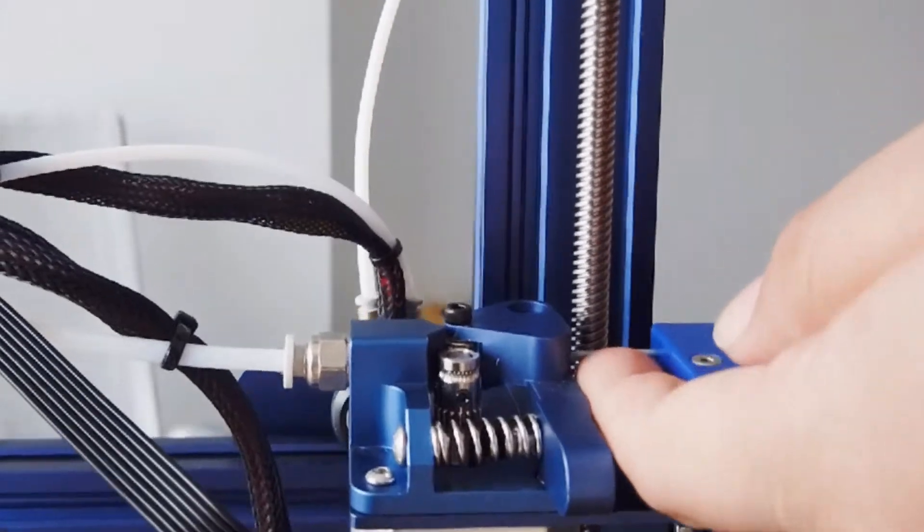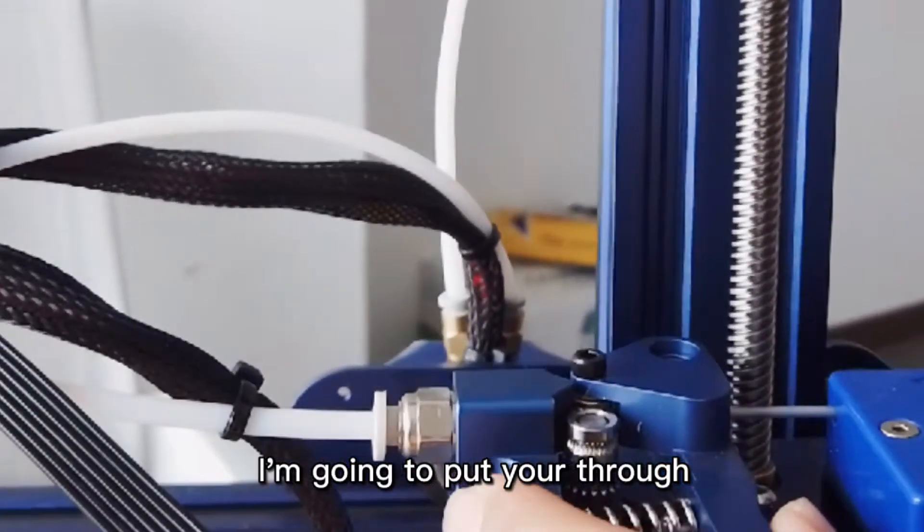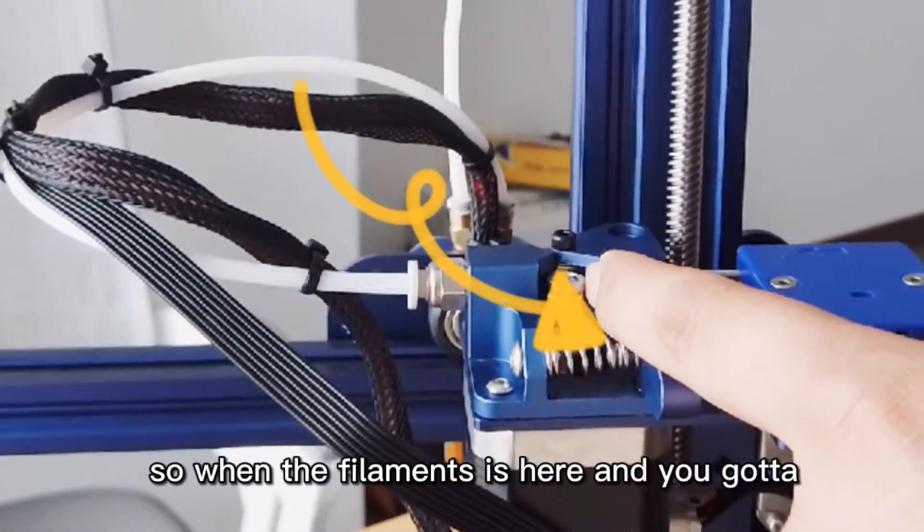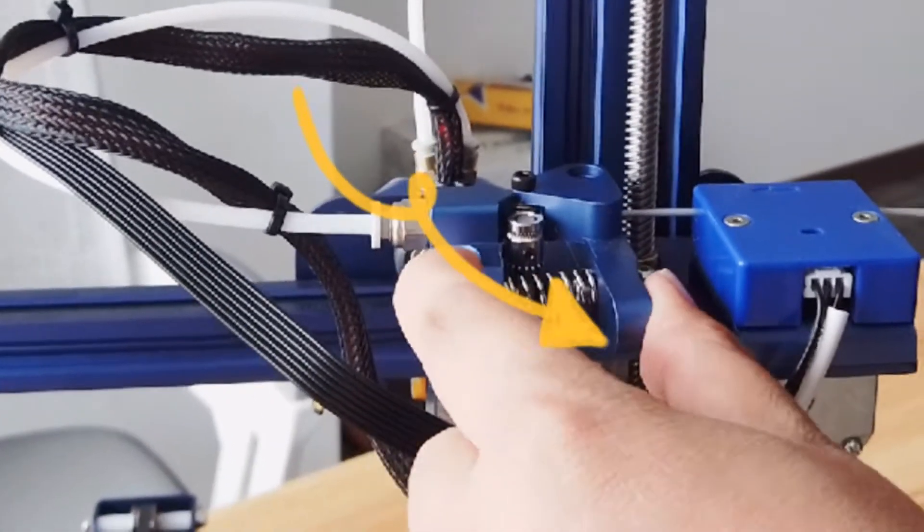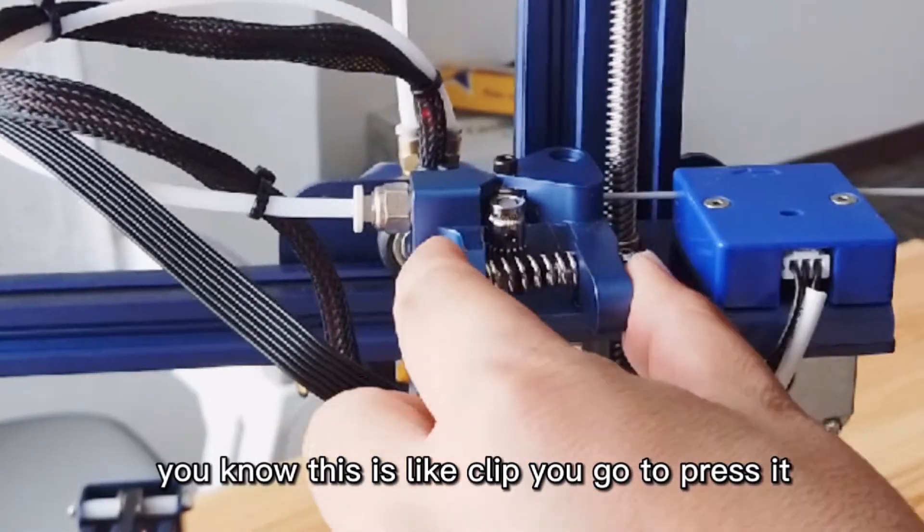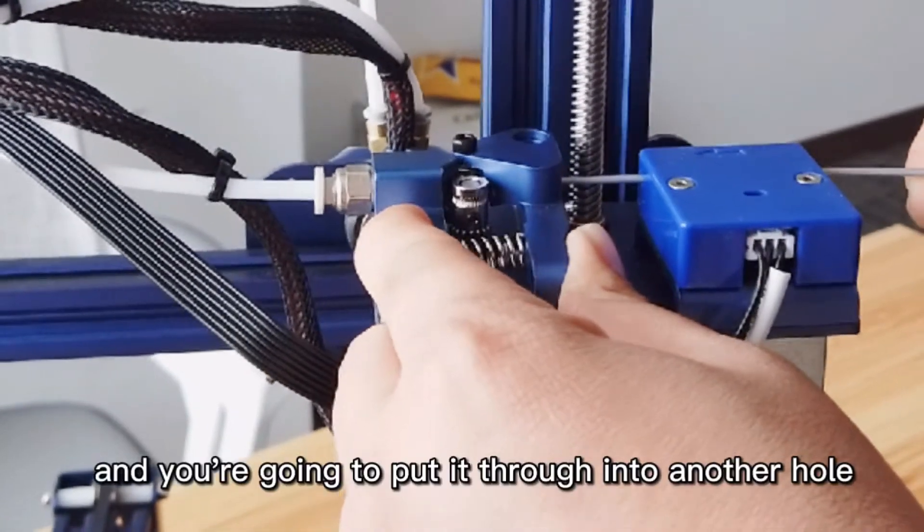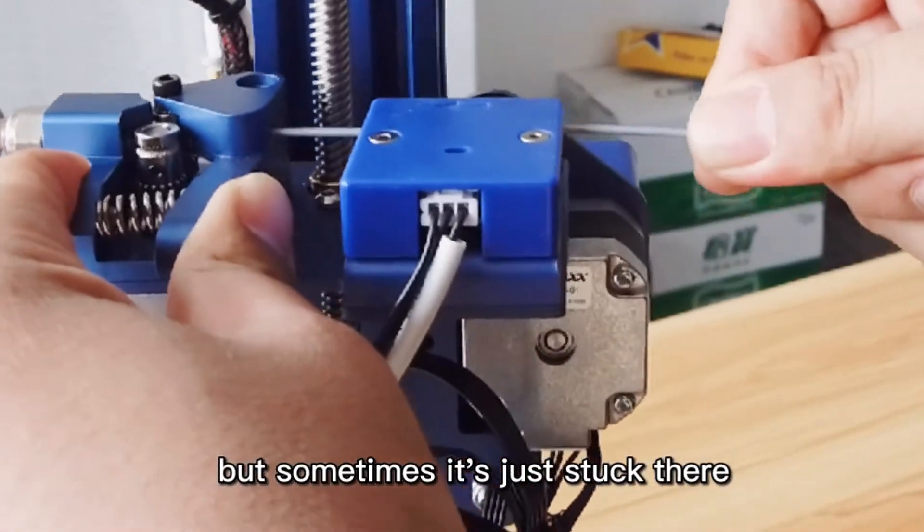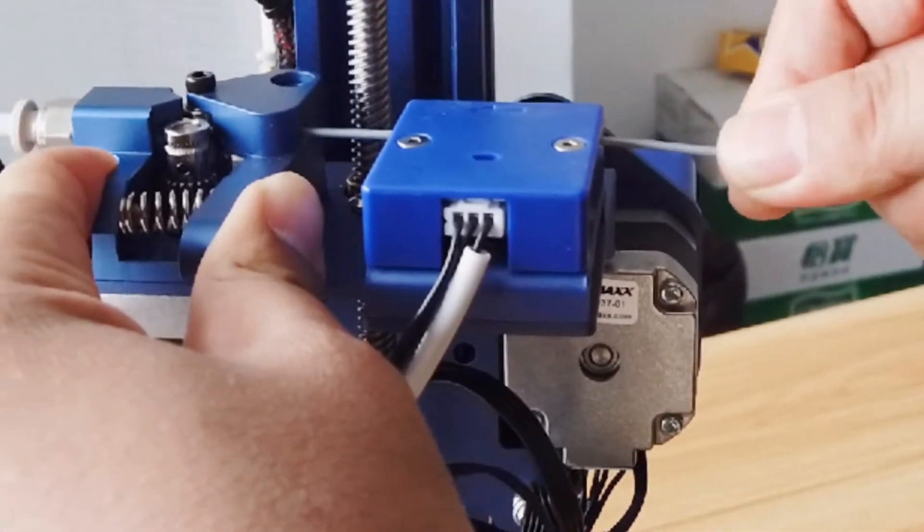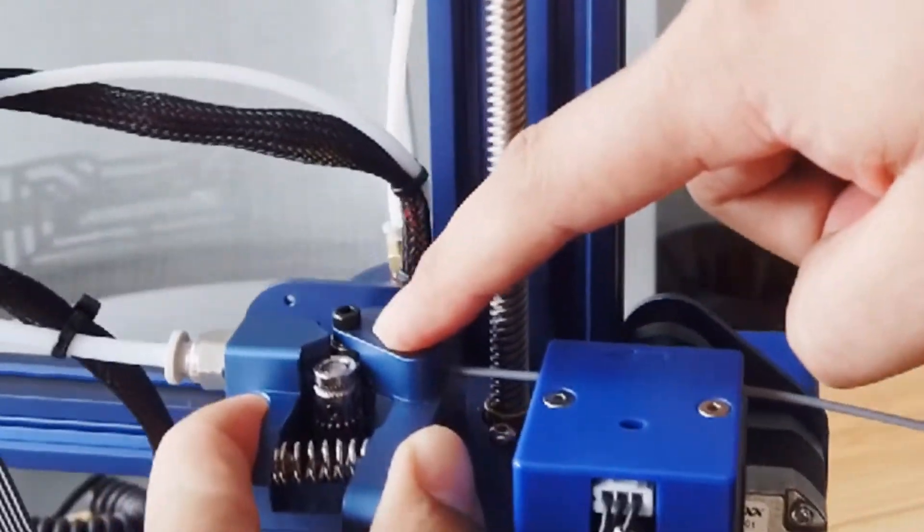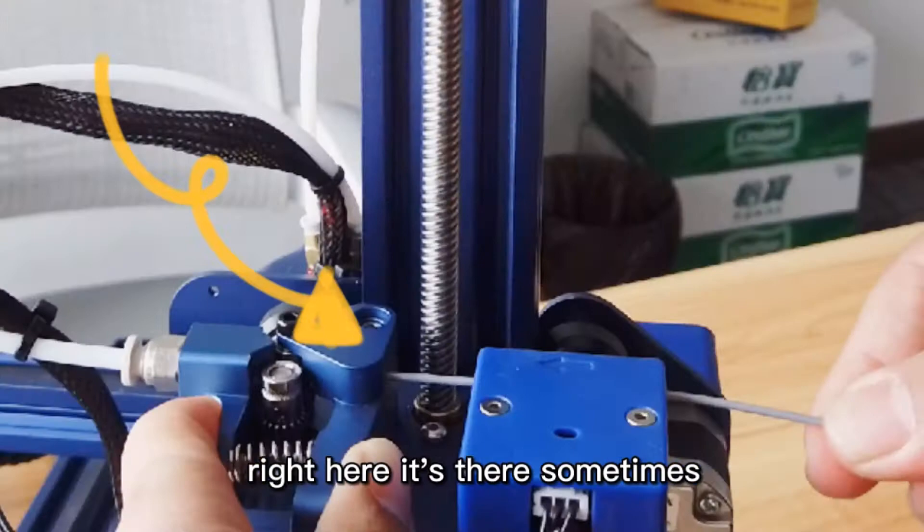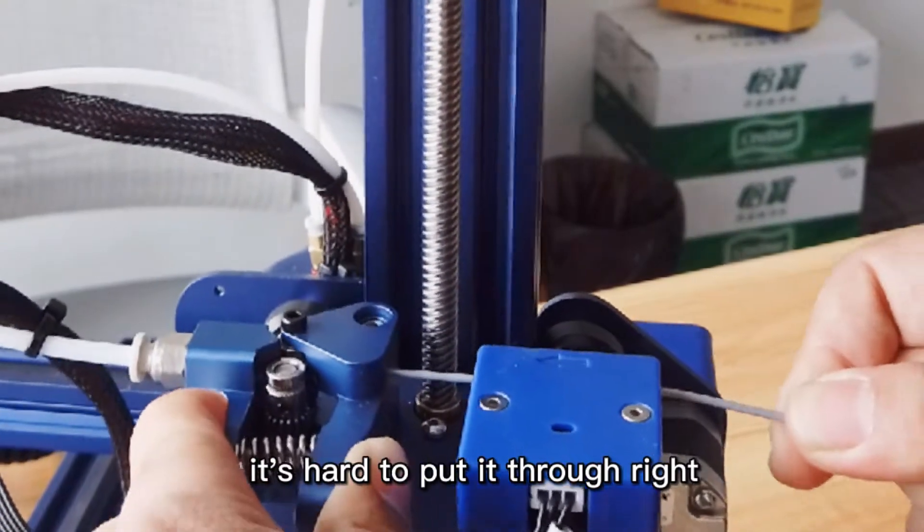And then there is a hole here in the extruder. I'm going to put it through. So when the filament is here you got to press this clip and it will open, and you're going to put it through into another hole. But sometimes it's just stuck there, like here right now. Can you see this filament right here? Sometimes it's hard to put it through, right?